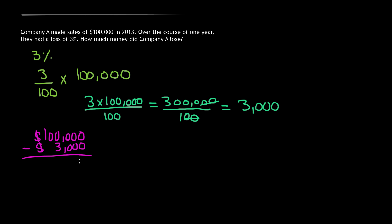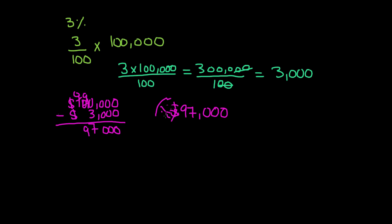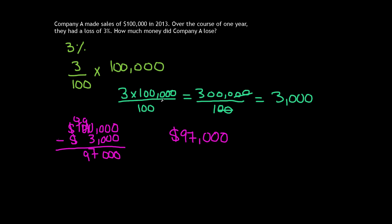We subtract the loss from total sales. Bringing down the zeros and borrowing: one hundred thousand minus three thousand equals ninety-seven thousand dollars. That means Company A, in the next year, only made sales of ninety-seven thousand dollars because they lost three percent over the course of that one year.